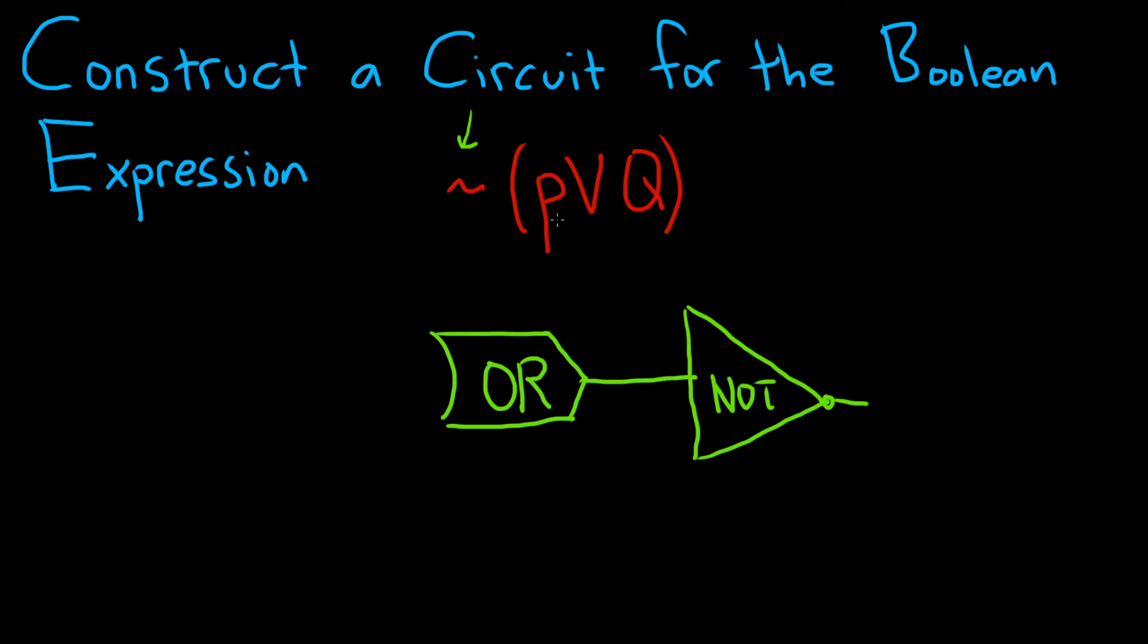This OR gate is going to have two inputs, the P and the Q. So that means we'll have P here and we'll have Q here.